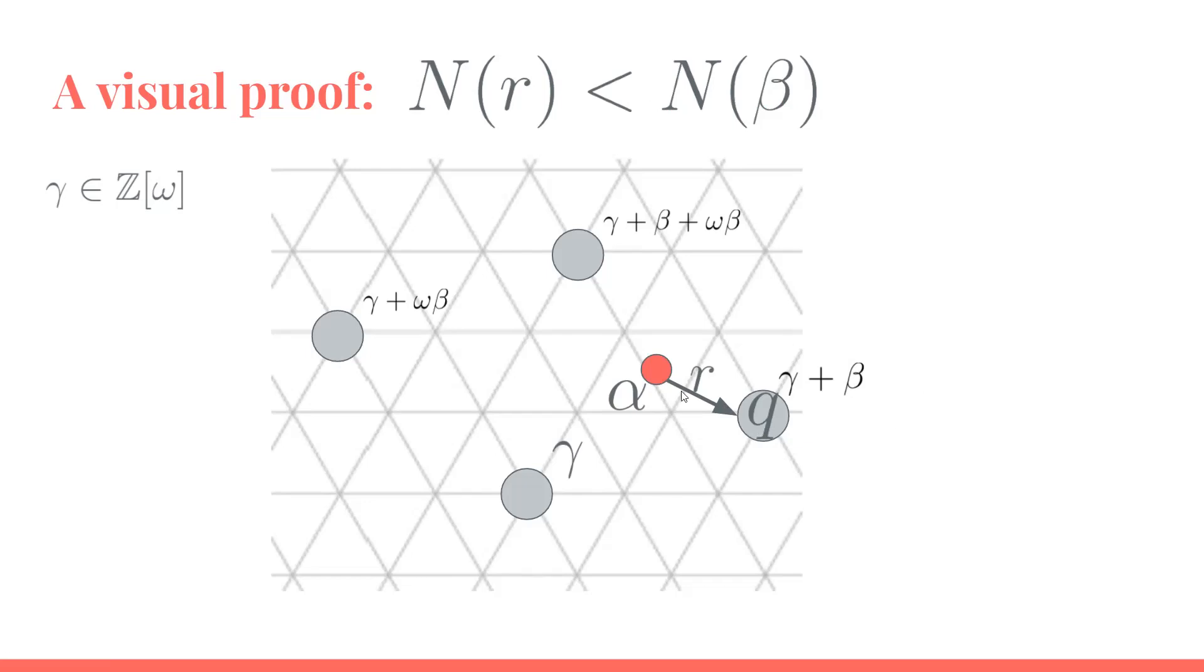So how far away α can be from the closest point is bounded by a distance that's actually less than β. And so if we look at that in the norm form, since that's what our norm is representing in the complex plane, we end up seeing that given this algorithm, the norm of r is always going to end up being less than the norm of β. That completes our proof of this division algorithm, which gives us Euclidean domain, and then also gives us principal ideal domain and unique factorization domain.